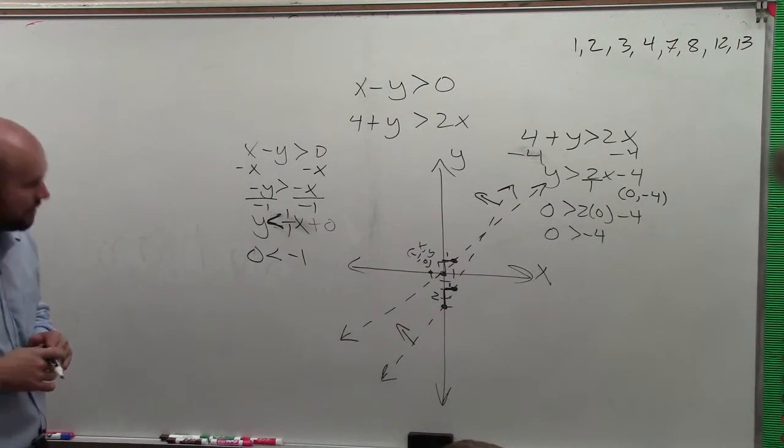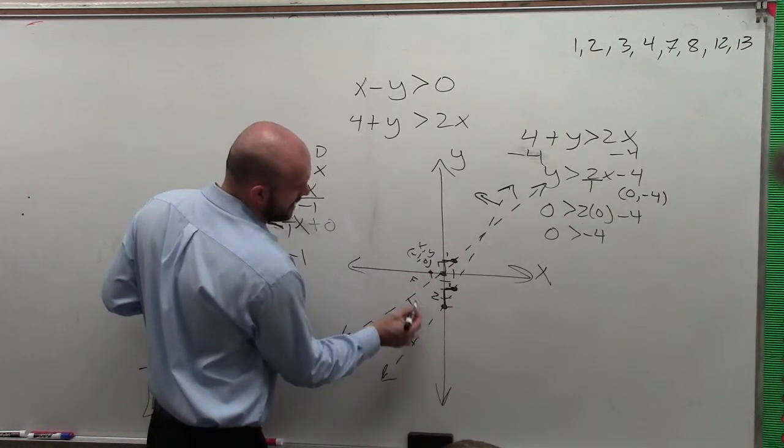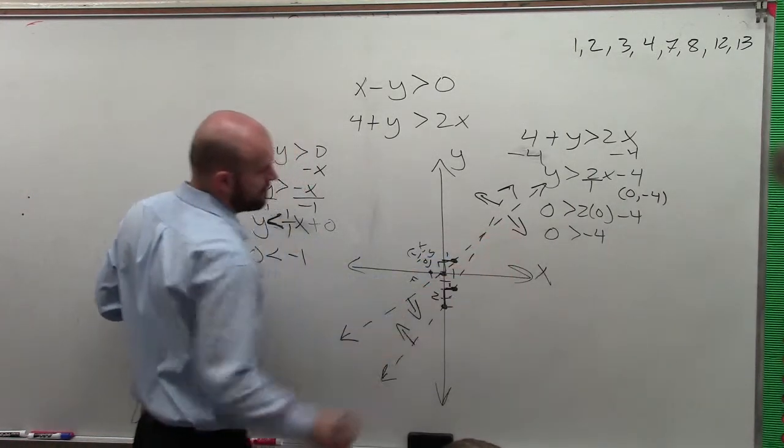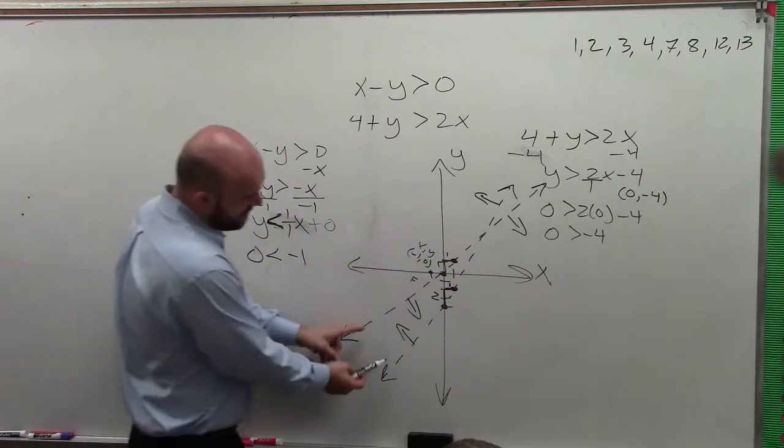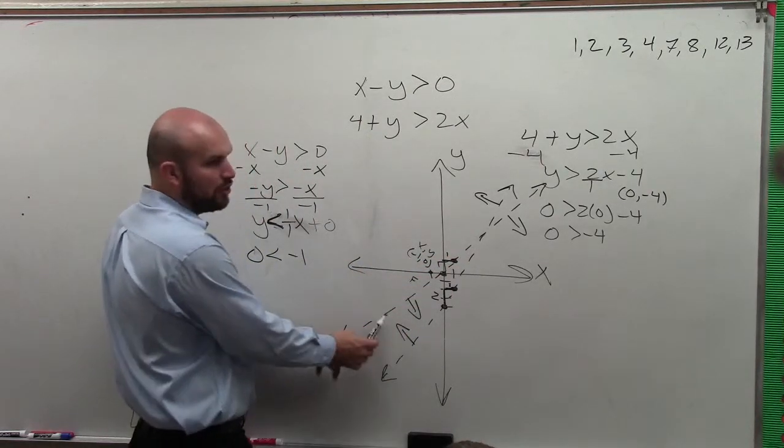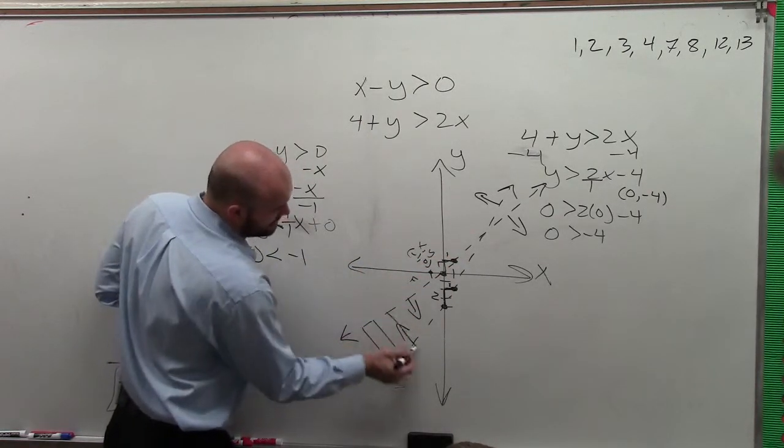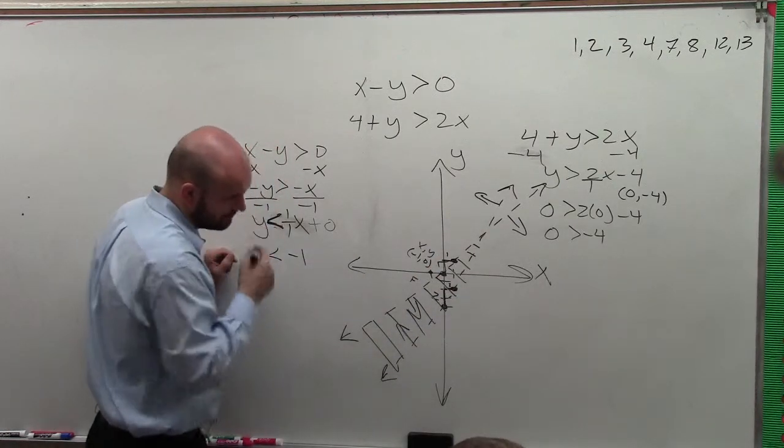So I'll just say 0 is less than negative 1. And is that true or false? False. So therefore, since that's false, I'm going to shade away from the test point. Correct? And what you guys can see is this region right here is the only region that is true for both inequalities. So that's the region I'm going to shade. So you only shade that's true for both.